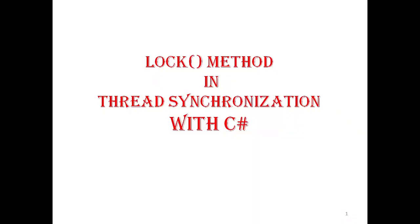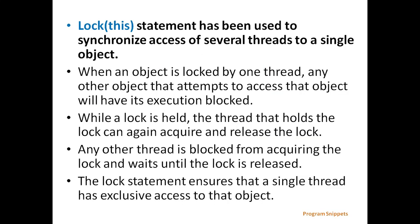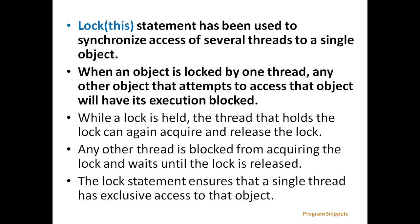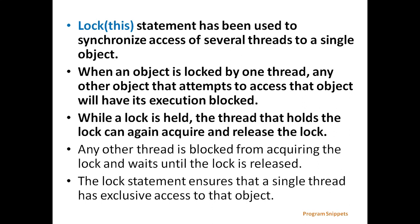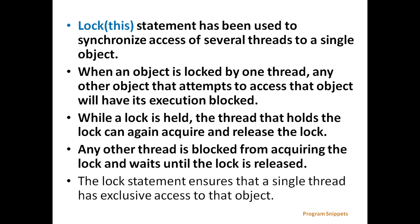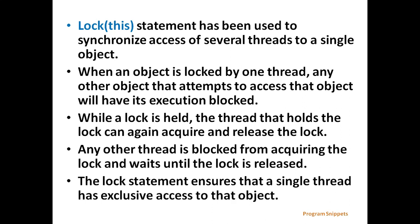Here we will see the lock method in thread synchronization. The lock statement has been used to synchronize access of several threads to a single object. When an object is locked by one thread, any other object that attempts to access that object will have its execution blocked. While a lock is held, the thread that holds the lock can again acquire and release the lock. Any other thread is blocked from acquiring the lock and waits until the lock is released. The lock statement ensures that a single thread has exclusive access to that object.